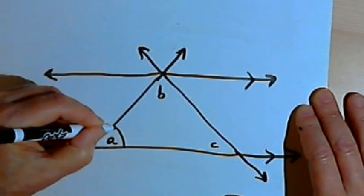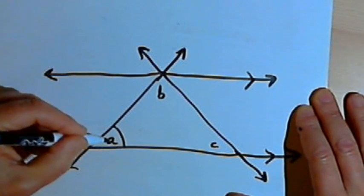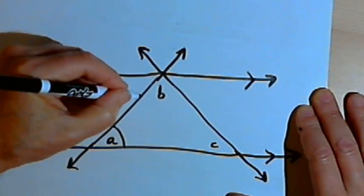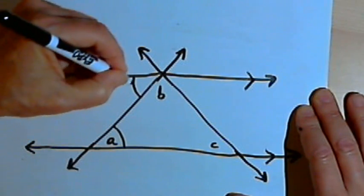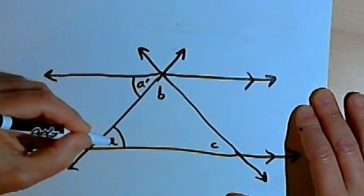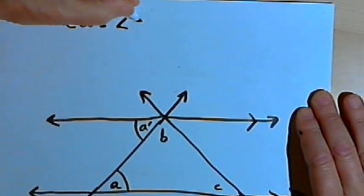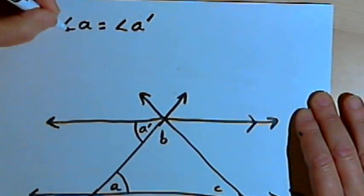So for angle A, the alternate interior angle to angle A would be up at the top here next to angle B, and I'm just going to call that A prime. So angle A and angle A prime are equal. So angle A equals angle A prime.